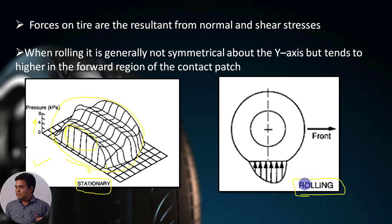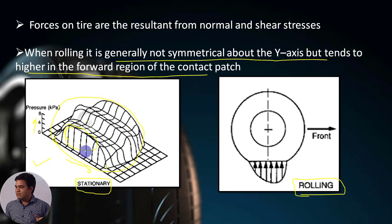In the rolling condition, when the vehicle starts moving, it is generally not symmetrical about the y-axis, but it tends to be higher in the forward region of the contact patch. You can observe in this pressure distribution diagram at the contact patch: at the rear side the pressure will be quite low, and as we approach towards the front direction it will be higher.